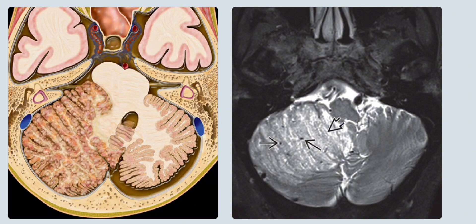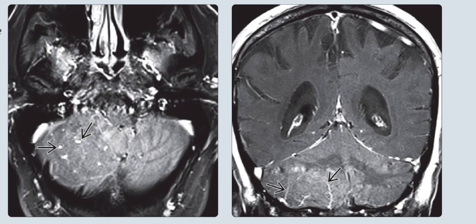The widened gyreform folia give this mass a distinctive striated appearance. Several dot-like flow voids are present between the enlarged folia. On the left is the axial T1 contrast-enhanced fat-suppressed MRI in the same patient, showing that the thickened folia do not enhance, but the prominent flow voids seen on T2-weighted MRI show strong uniform enhancement, suggesting they are vascular structures. The coronal T1 contrast-enhanced scan in the same case shows the enhancing vessels nicely.